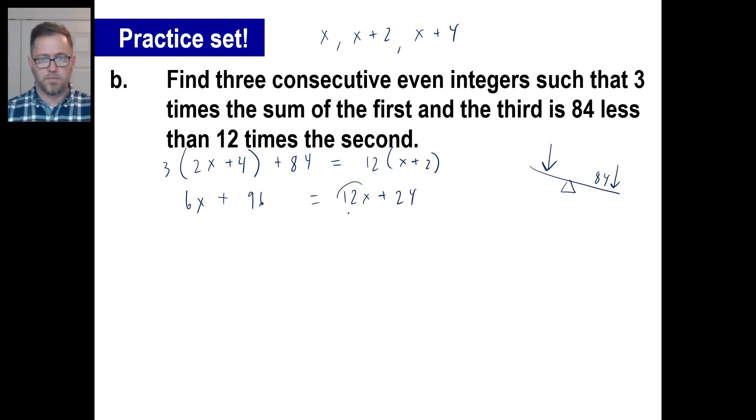Well let's move the 12X over. That gives us negative 6X. And let's move the 96 over. So 24 minus 96 is the same thing as 96 minus 24, which is 72, but the opposite of that. So negative 6 goes into negative 72 12 times.